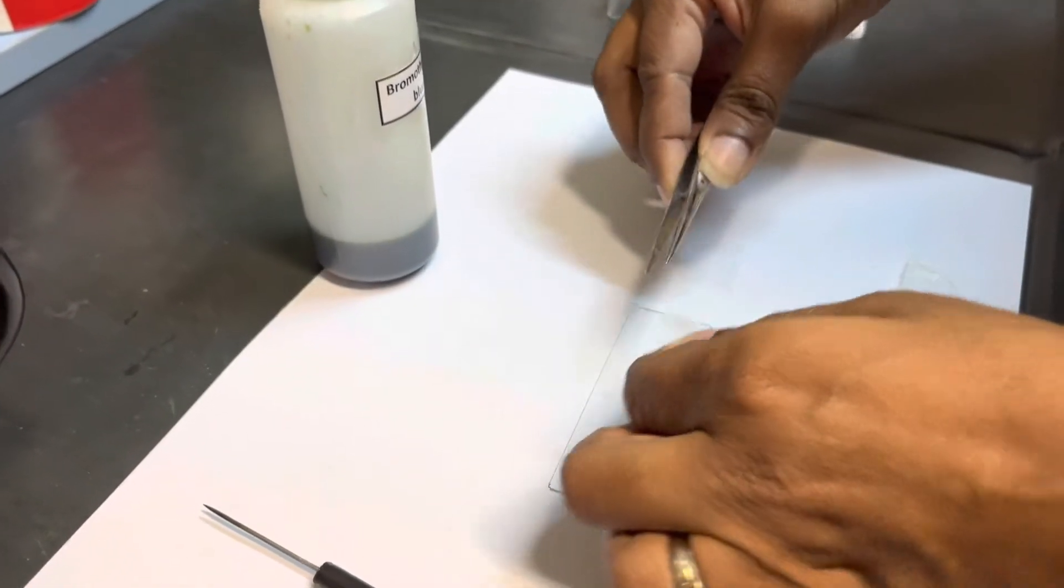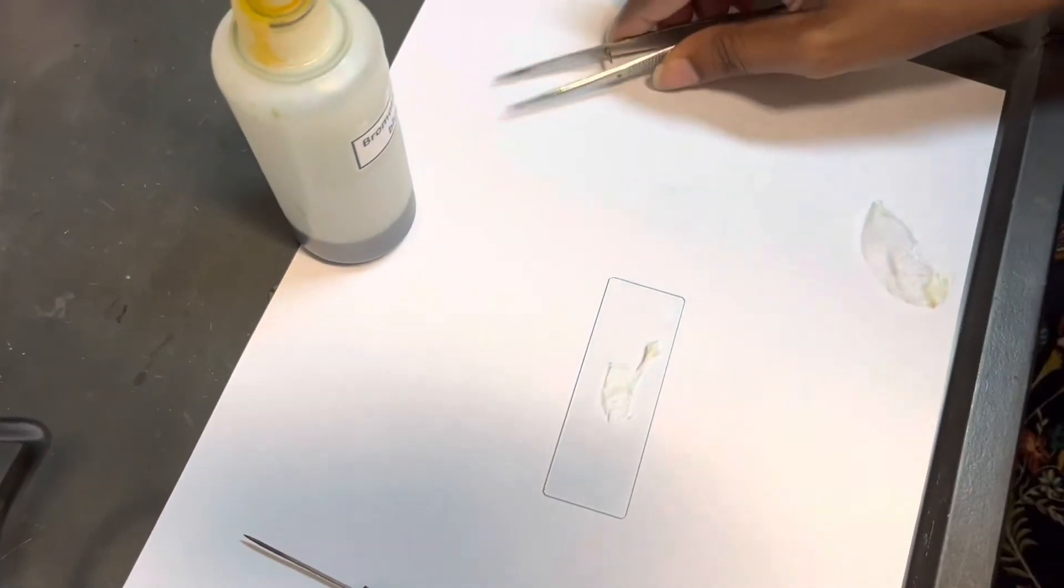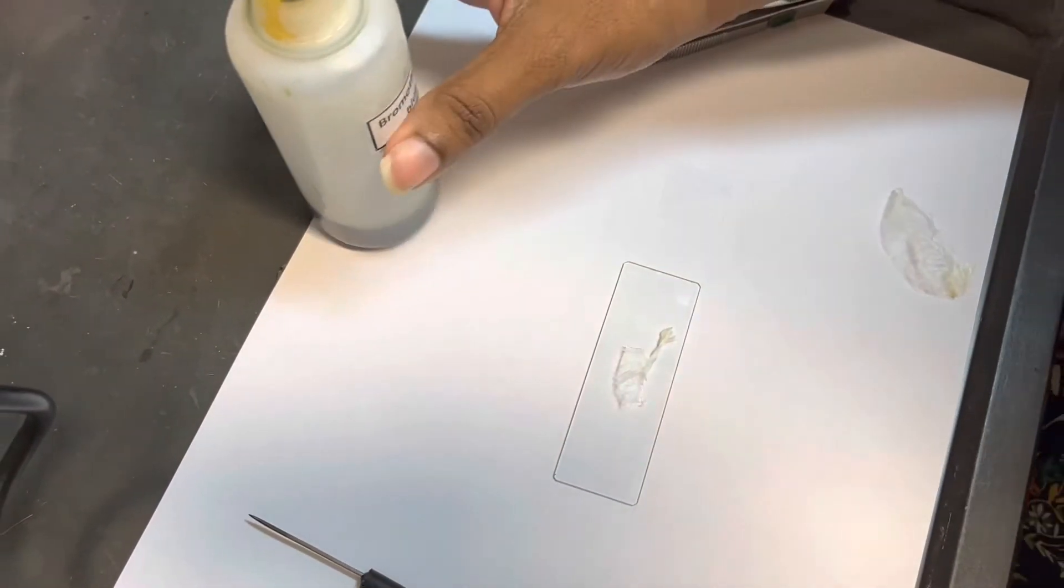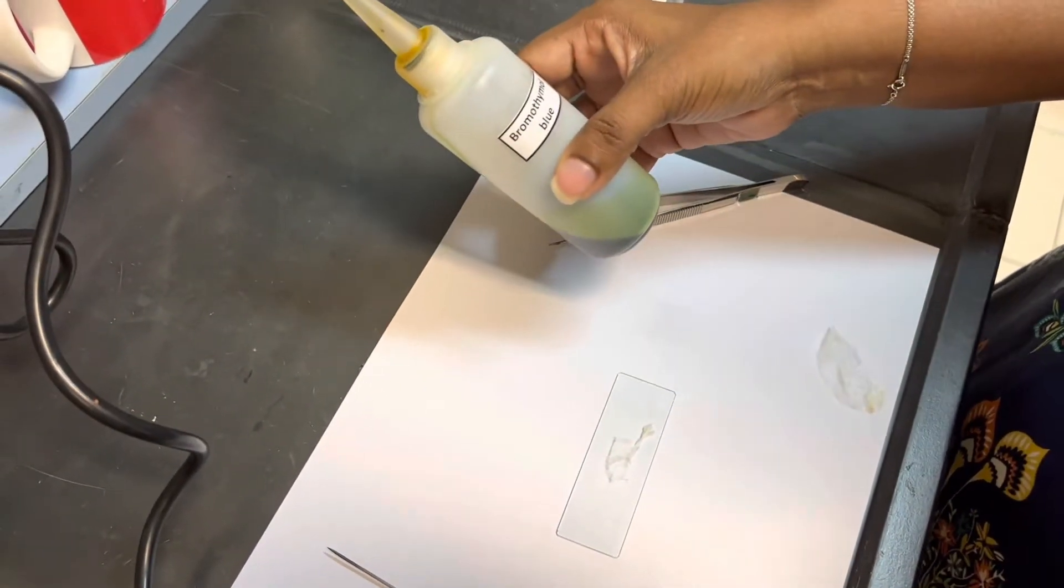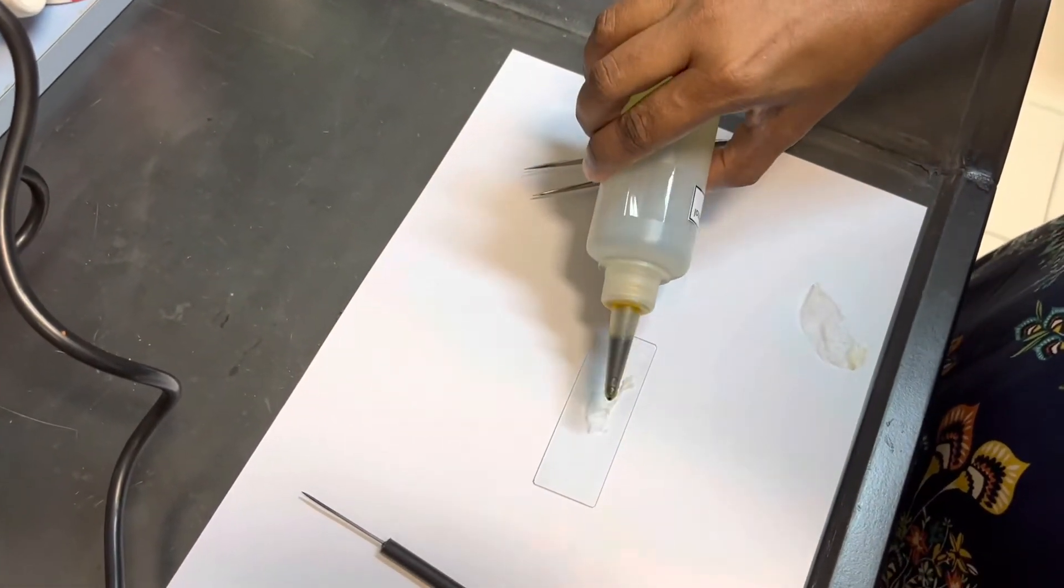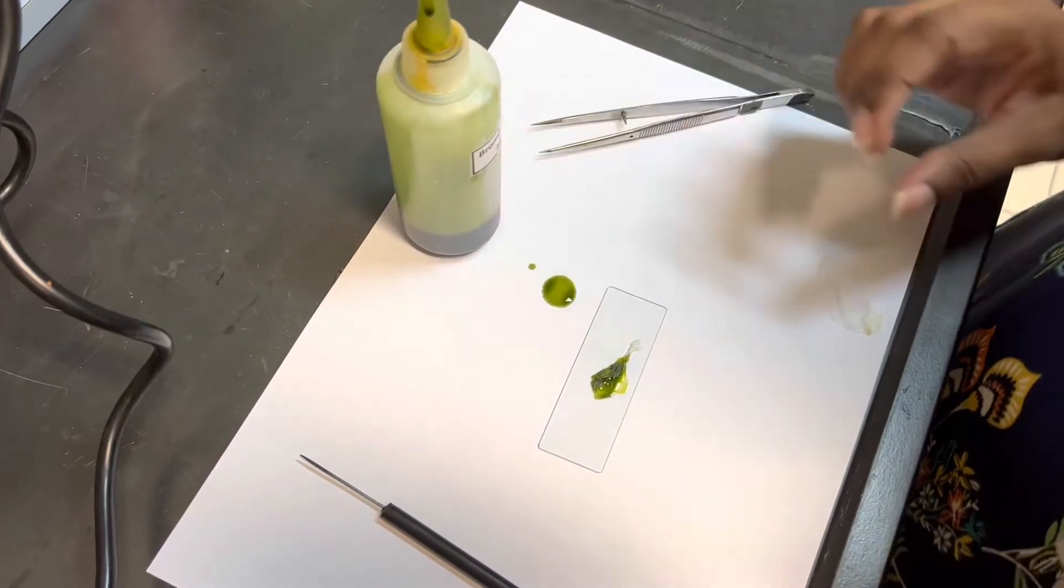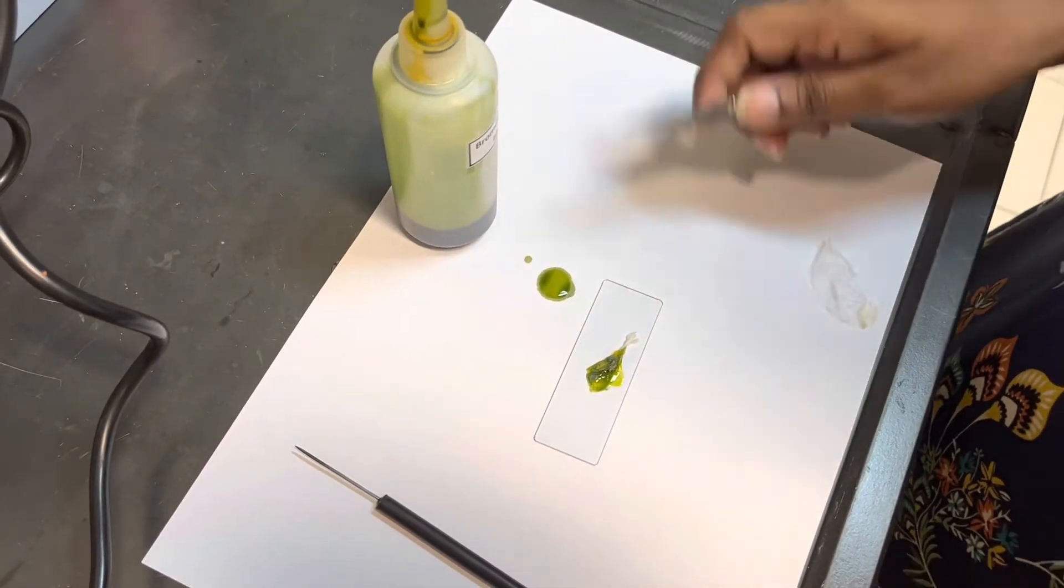Place it on the slide like that. We will need to use indicator solution or stain because you will not be able to see the onion clearly when it's not stained, because everything is colorless.